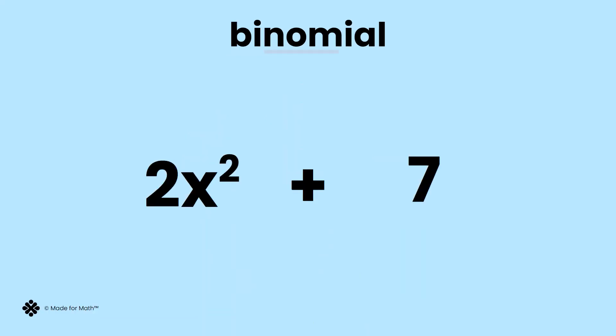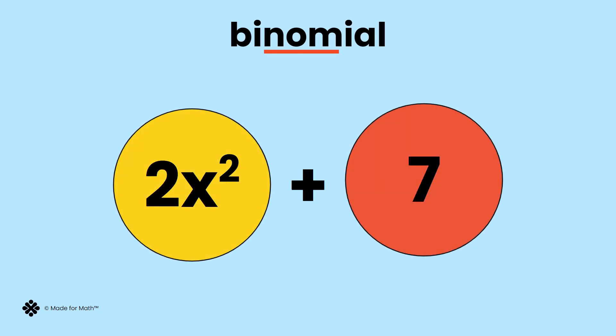Binomial: 'nom' means name, 'bi' means two. Binomial means two names, and in math it means two terms.